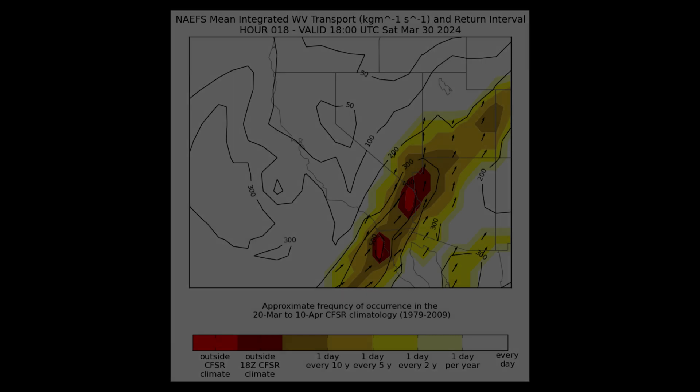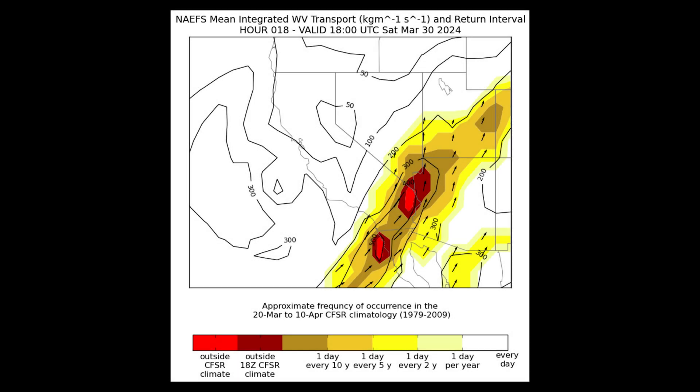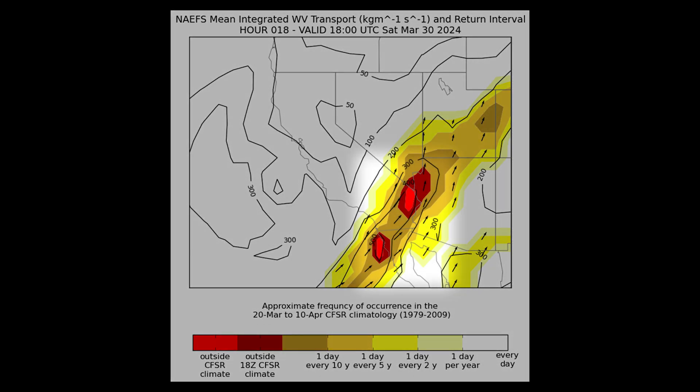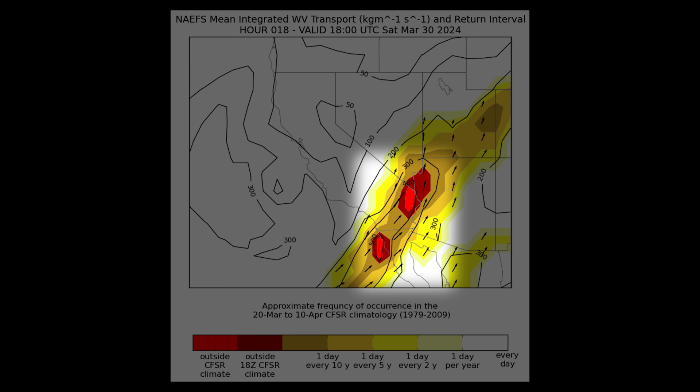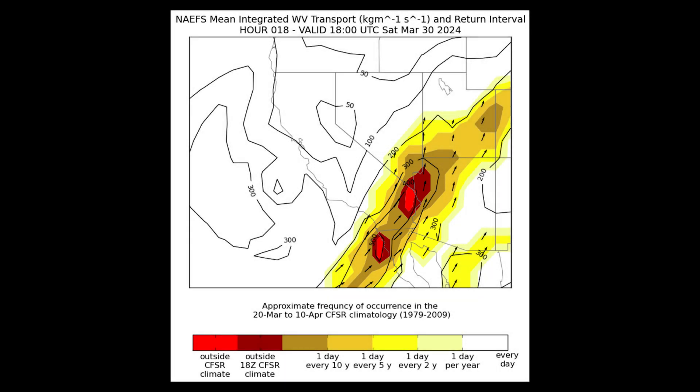In this example, we can see that Integrated Water Vapor Transport across the southeastern part of California along the Colorado River is outside of the CFSR climatology from 1979 to 2009 for 20 March to 10 April — a 10-day window either side of the forecast which is valid for 18 UTC Saturday, March 30th.